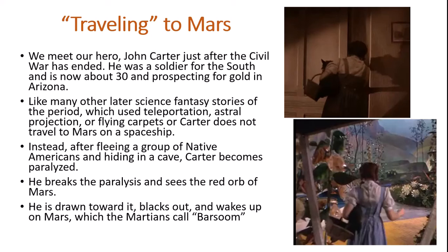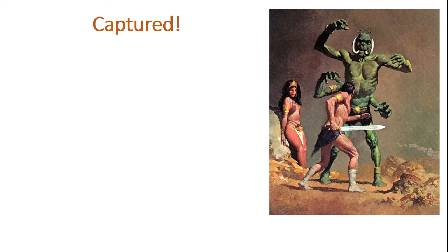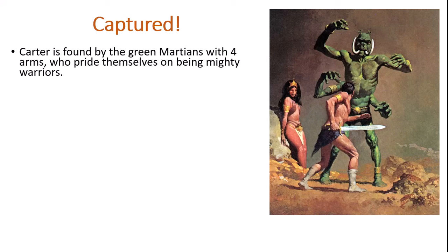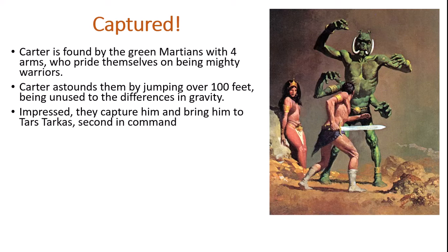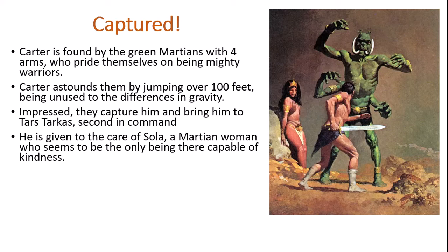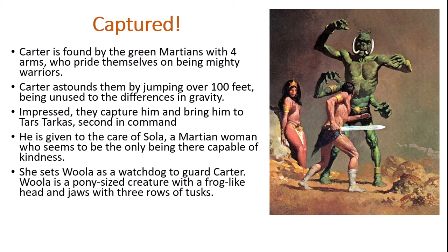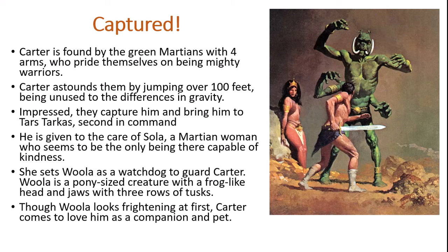John Carter's first challenge and trial: he is captured. There are red Martians and green Martians on Barsoom. John Carter is found by green Martians who have four arms and pride themselves on being mighty warriors. Carter astounds them by jumping over 100 feet because of the differences in gravity. They capture him and bring him to Tars Tarkas, the second in command. He's given into the care of Sola, a Martian woman who seems to be the only green Martian capable of kindness. She sets Woola — a pony-sized, frog-legged creature with tusks — to guard Carter. It looks frightening at first, but becomes his loyal companion and pet.